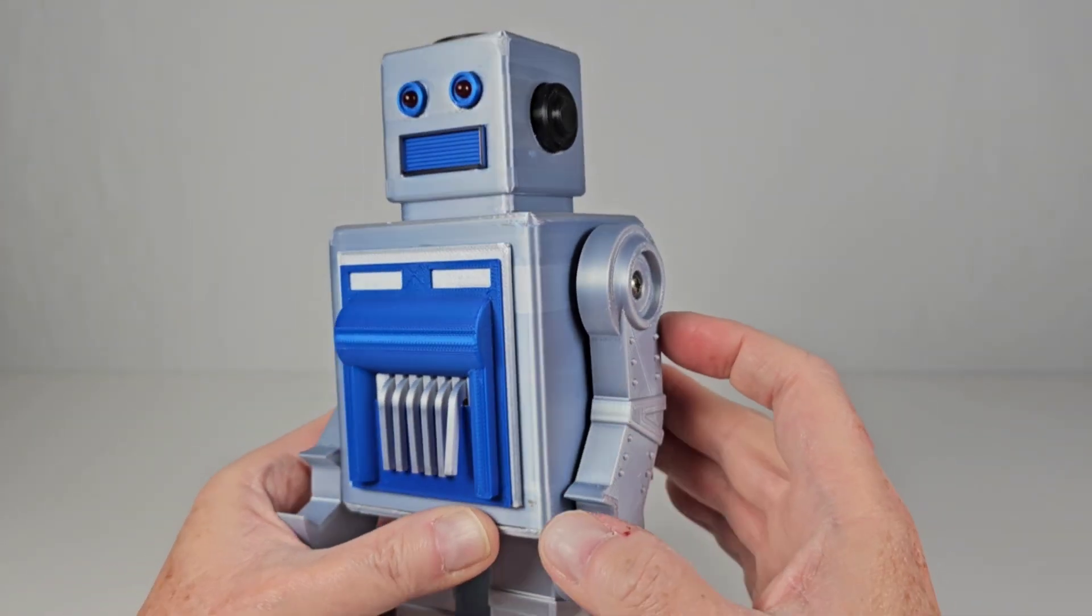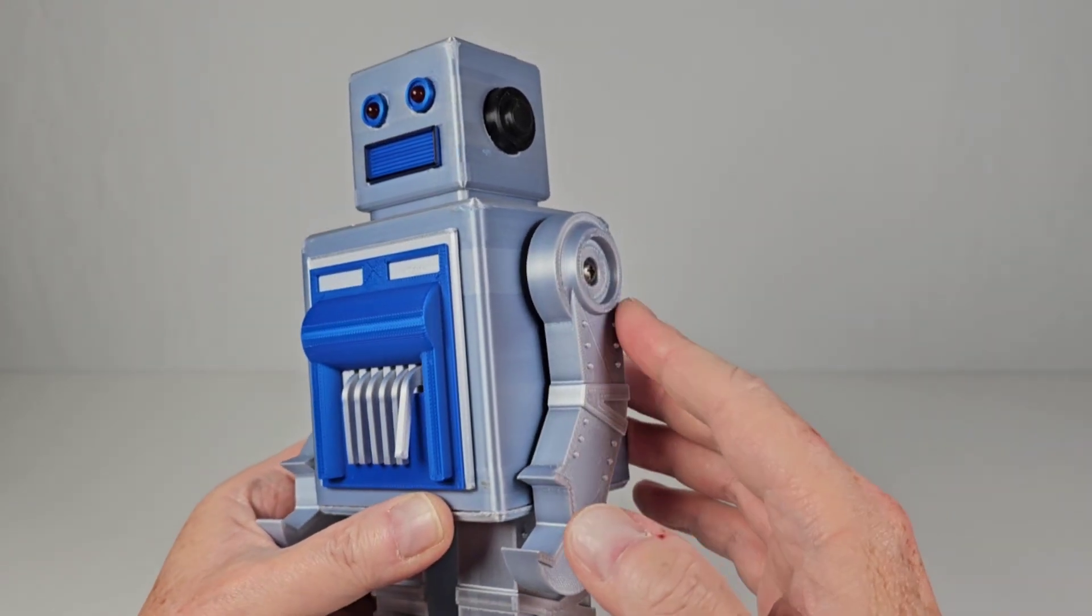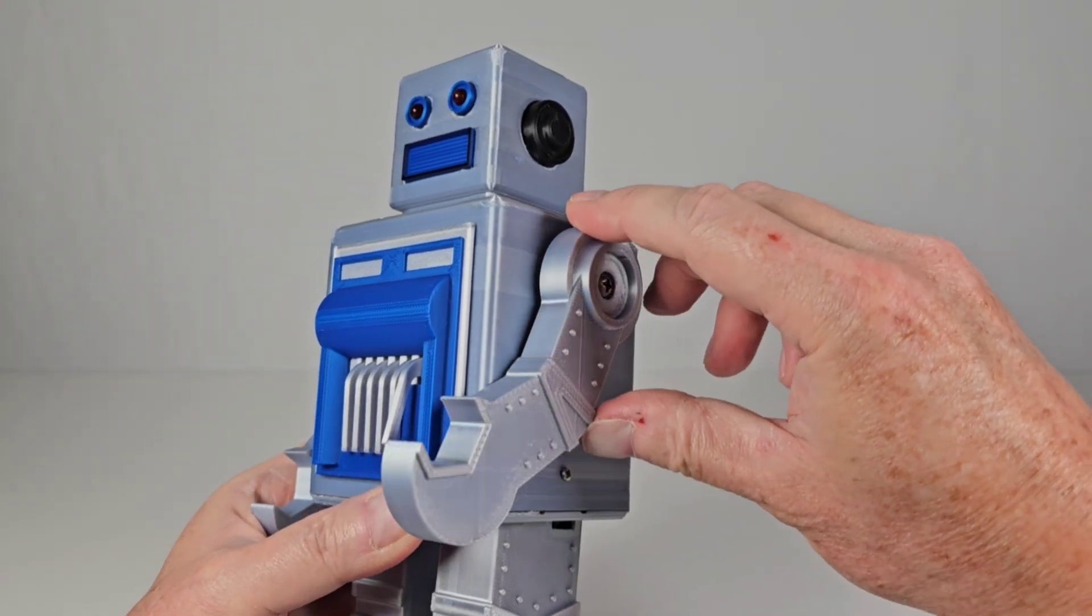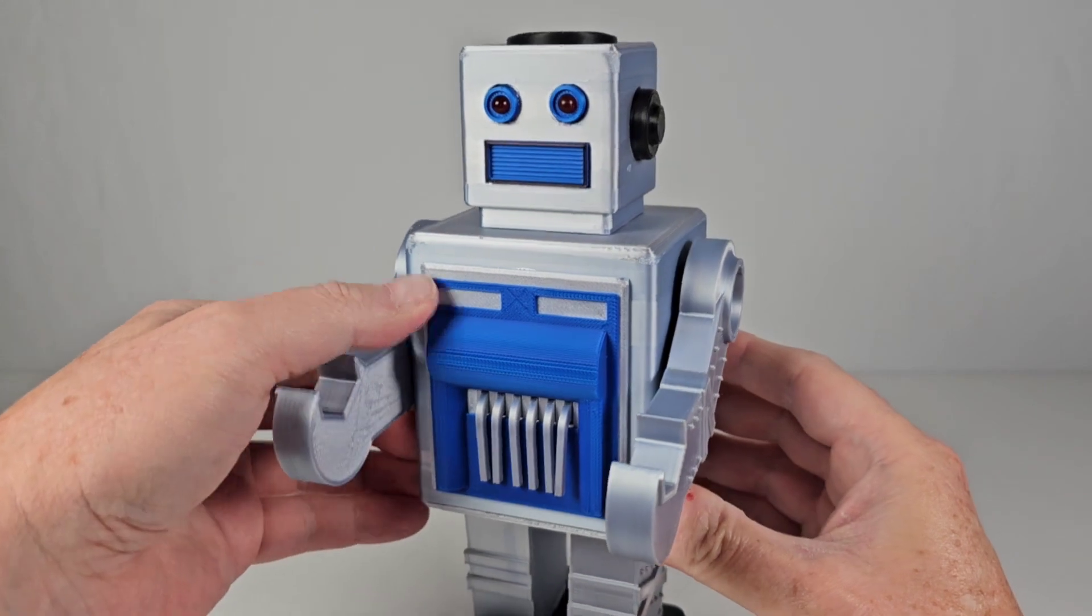The other thing that's really cool about this robot: the original version of this you could not move the arms without breaking them. These you can. You can adjust it like this, maybe you want the arms to be more forward.